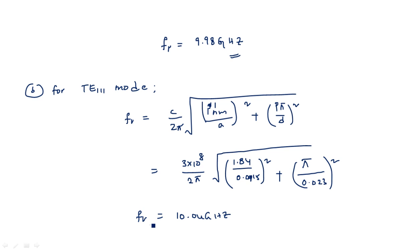In this way, we can calculate the resonant frequency for a circular cavity resonator using the formula. We should remember the values of P_nm and P'_nm from the table, which are given in previous videos. Now let us move to the second problem on Q factor.